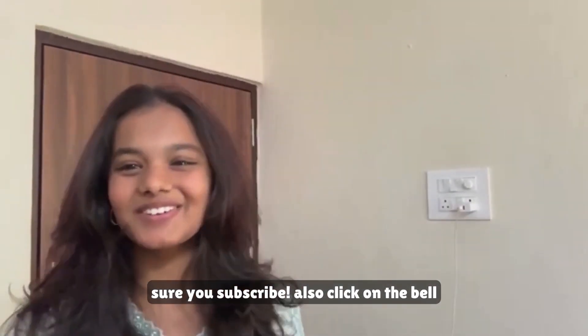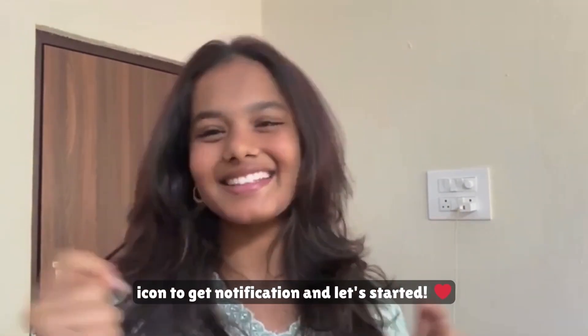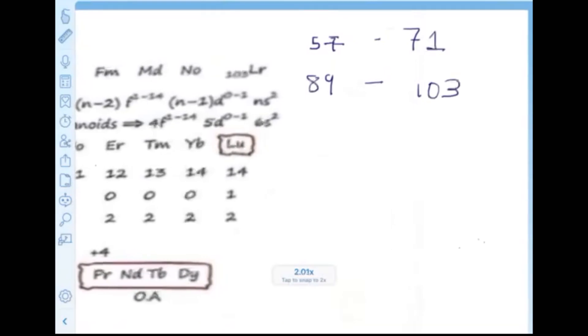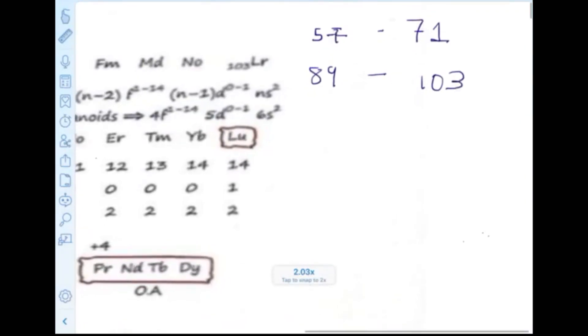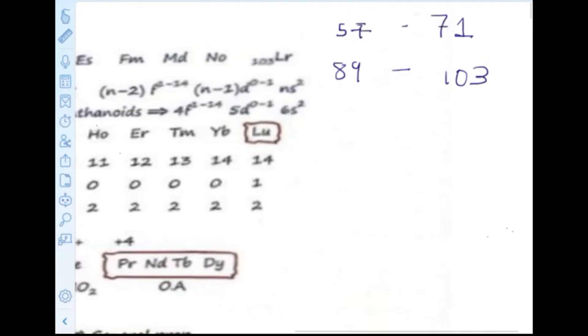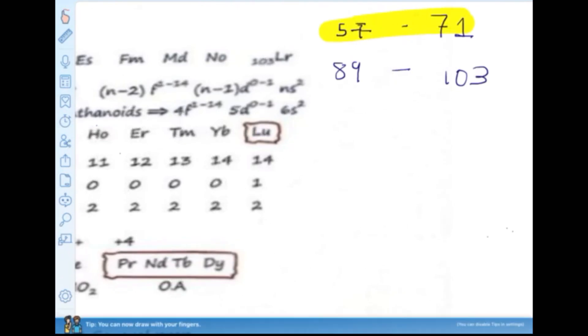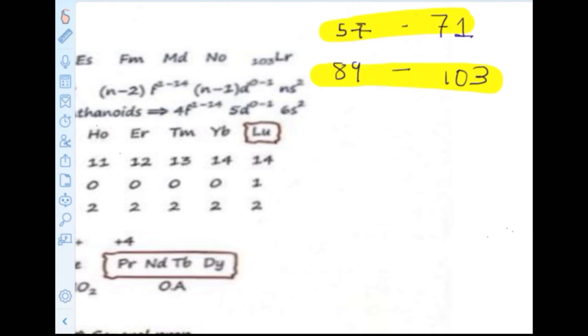Make sure you subscribe to our channel and click on the bell icon to get notifications, and let's get started. Today we are going to study the lanthanoid and the actinoid series, that is the F-block. The lanthanoid series ranges from atomic number 57 through 71, and the actinoid series ranges from atomic number 89 to 103.